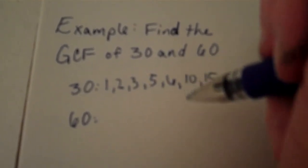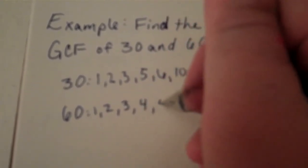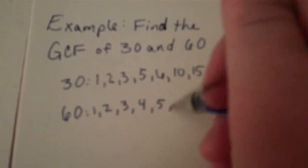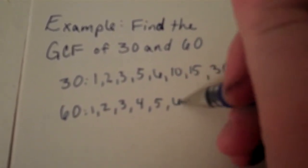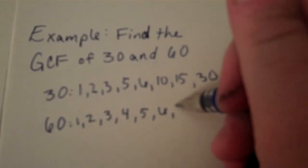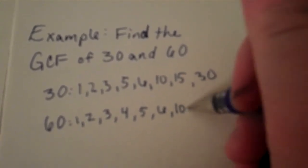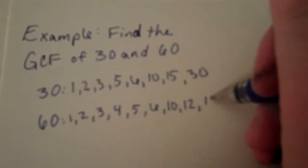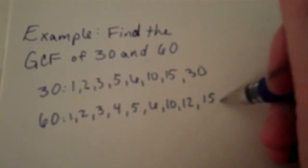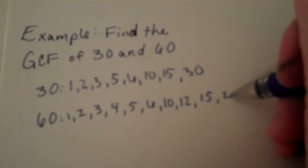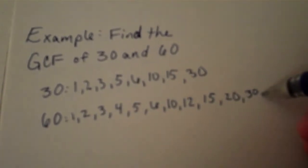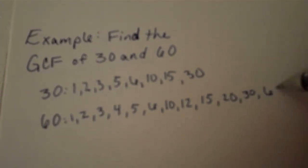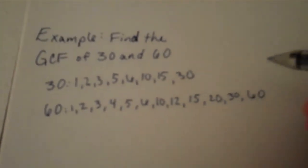Now I'll list all the factors of sixty: one, two, three, four, five, six, ten, twelve, fifteen, twenty, thirty, and sixty. It's a long list.